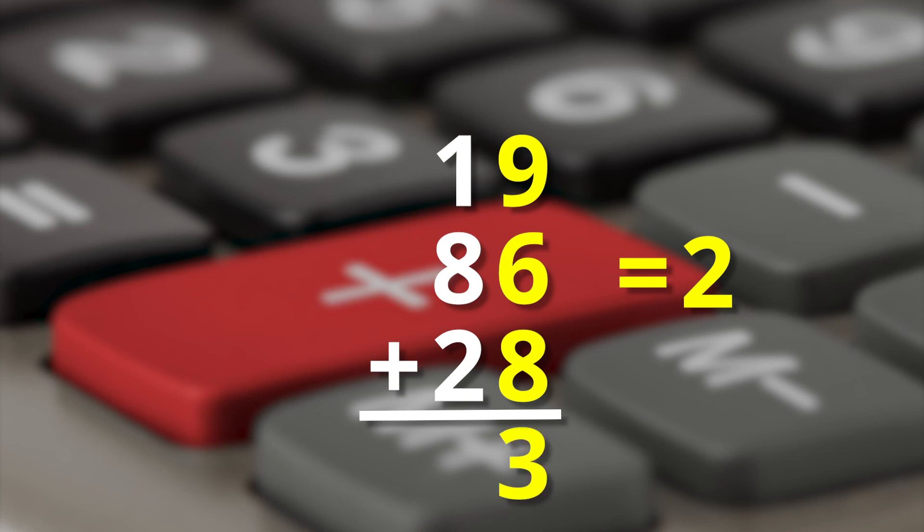That means you put the three below the ones column and the two to the tens column. So the sum of nineteen plus eighty-six plus twenty-eight is a hundred and thirty-three. You see? You get it? Super simple, isn't it? Well done!